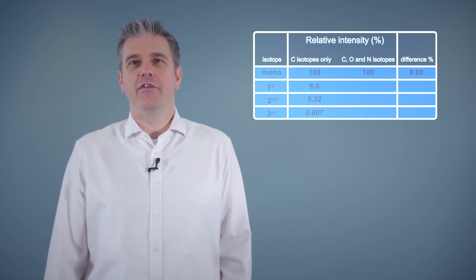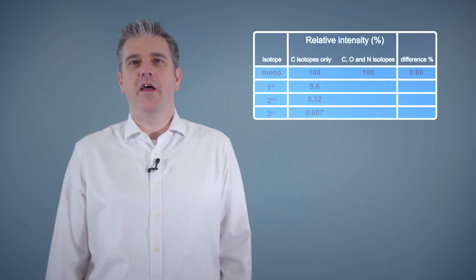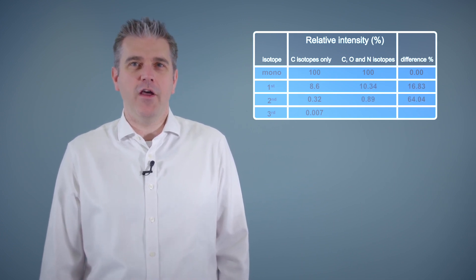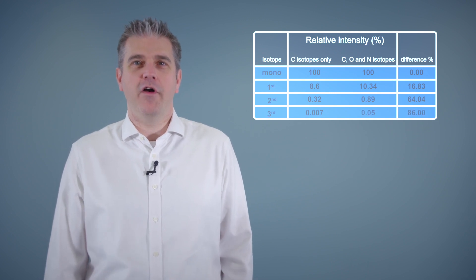However, an accurate calculation using isotopes of carbon, oxygen, and nitrogen predicts them to be at 10.34%, 0.89%, and 0.05%. This highlights the way we can use the isotope patterns in mass spectrometry.